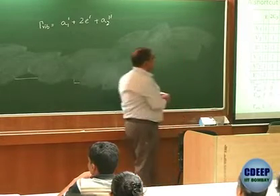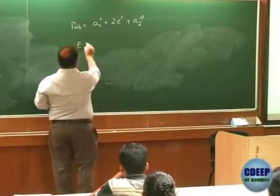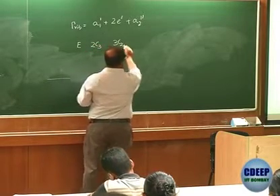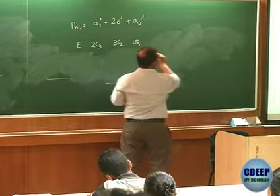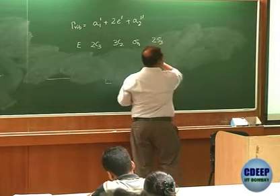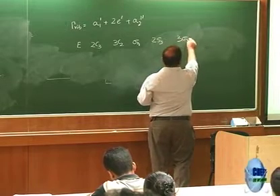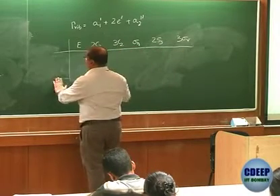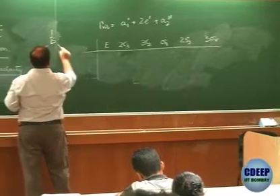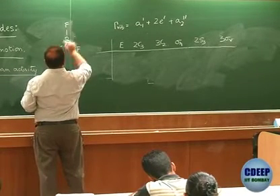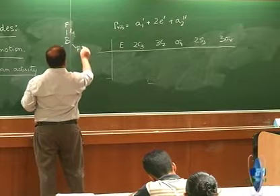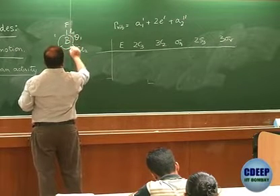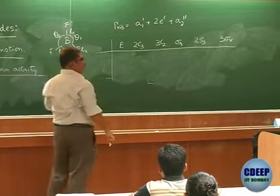So I will need to write E, 2C3, 3C2, sigma_h, 2S3, 3 sigma_v. We are dealing with this molecule, say BF3. Let me call these bond lengths L1, L2, L3, and let me call these angles theta 1, theta 2, theta 3.